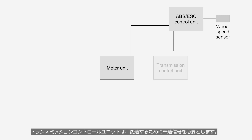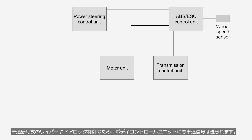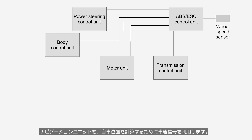The transmission control unit needs the vehicle speed signal to determine shifting gear. The power steering control unit also needs the signal for assist force control. For vehicle speed-sensitive wipers and door lock control, the signal is also transmitted to the body control unit. The navigation unit also utilizes the vehicle speed signal to calculate the current vehicle position.